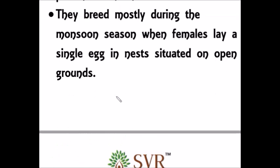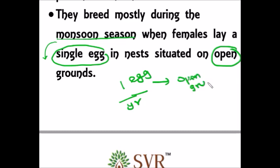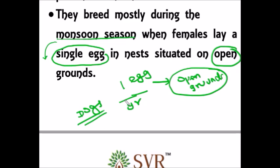Do you know the reason why the Great Indian Bustard has become critically endangered? The Great Indian Bustard breeds during the monsoon season, and the issue is that it lays only a single egg in the open ground — just one egg per year, laid in the open ground. This makes it most vulnerable to predation by dogs and other animals, which is why the IUCN Red List of Threatened Species classifies it as critically endangered.